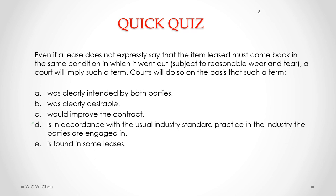Courts will do so on the basis that such a term — D — is in accordance with the usual industry practice in the industry the parties are engaged in. Let's go through the other answers before explaining why D is right. A says it was clearly intended by both parties — but since it was not expressly stated, we can't say that. B says it was clearly desirable — but that alone is not a basis for implying a term. C says it would improve the contract — also not enough; we need more than mere improvement.